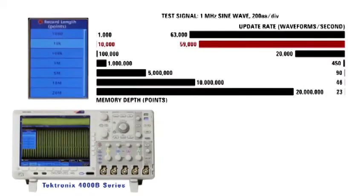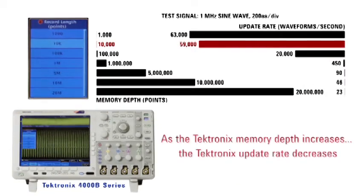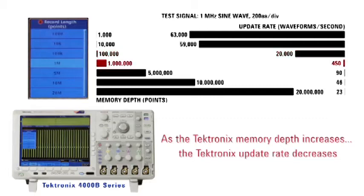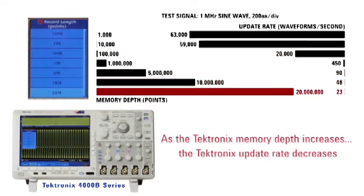Tektronix defaults their memory depth to just 10,000 points, and it must be adjusted manually by the user because of the trade-off between memory depth and update rate.